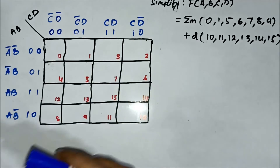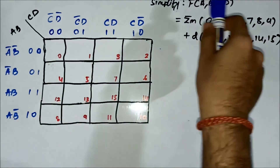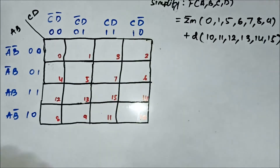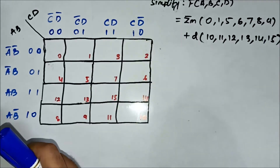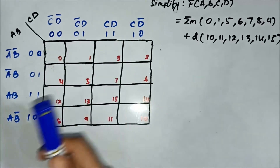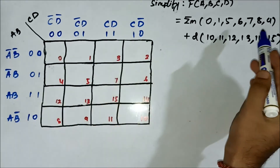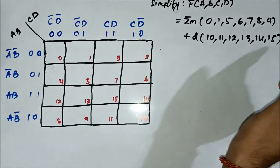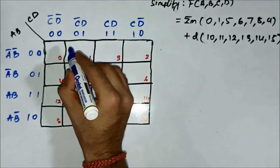This is a question related to don't care condition SOP KMAP simplification. We have the boolean expression given in terms of the min-term values and the don't care values. The min-term values given are 0, 1, 5, 6, 7, 8, 9 — we will mark them as 1 first.